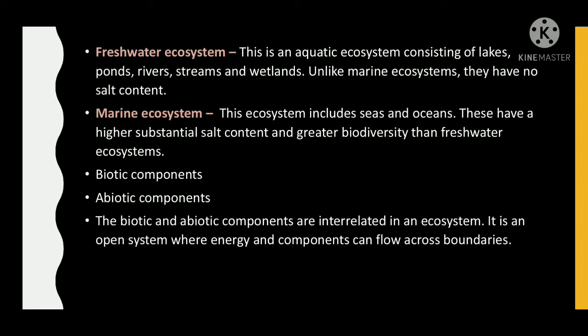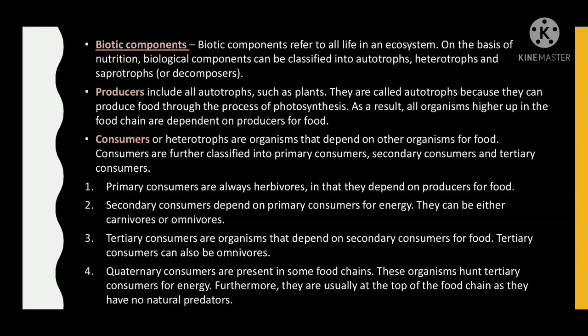The biotic and abiotic components are interrelated in an ecosystem. It is an open system where energy and components can flow across boundaries. Biotic components refer to all life in an ecosystem. On the basis of nutrition, biological components can be classified into autotrophs, heterotrophs, and saprotrophs or decomposers.